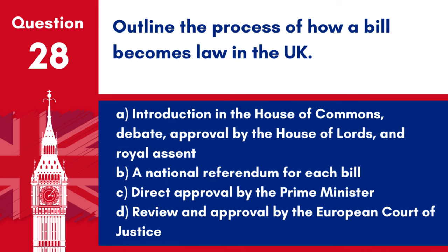Question 28: Outline the process of how a bill becomes law in the UK. a. Introduction in the House of Commons, debate, approval by the House of Lords and Royal Assent. b. A national referendum for each bill. c. Direct approval by the Prime Minister. d. Review and approval by the European Court of Justice. Answer: a. Introduction in the House of Commons, debate, approval by the House of Lords and Royal Assent. This process ensures that proposed legislation is thoroughly examined and agreed upon before becoming law.